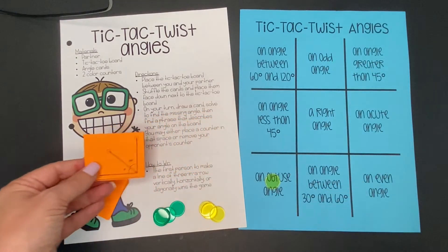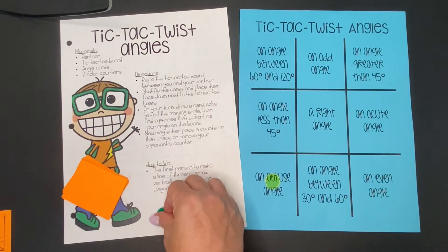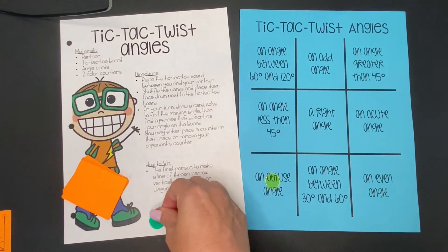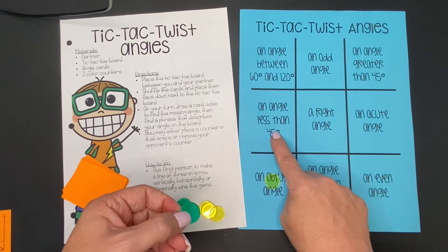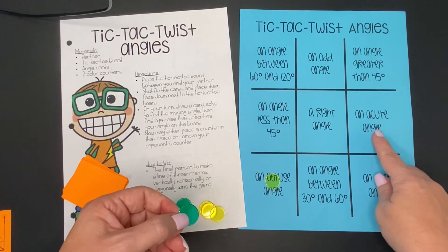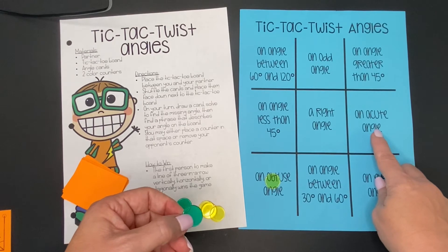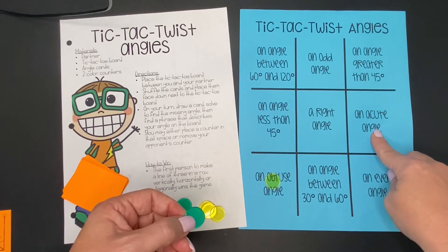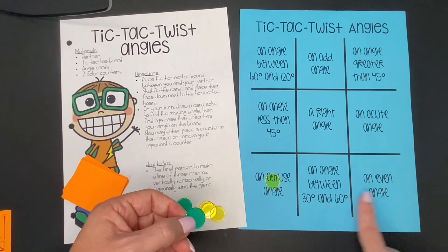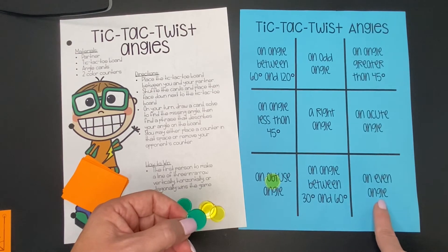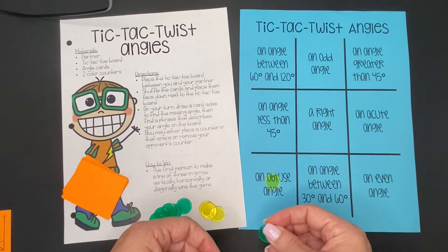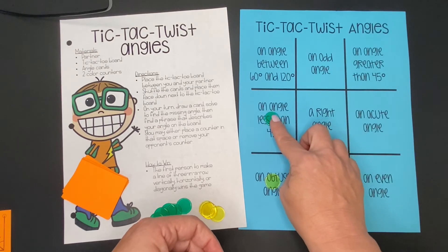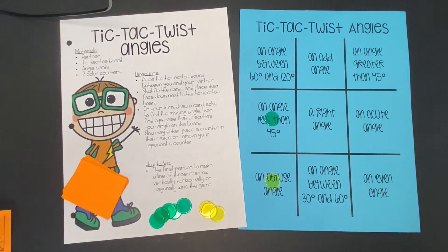Let's look over here — where could they put their counter? Less than 45 or acute angle, because anything less than 45 degrees is acute. It could be an even angle too, so any of those. Let's go with the less than 45 degree angle right there.